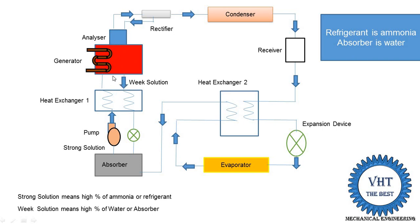The weak solution remaining in the generator — which is the absorber (water) — is supplied back into the absorber. However, the temperature of the weak solution in the generator is high. So we place heat exchanger 1 here: this heat exchanger increases the temperature of the strong solution being supplied into the generator. The weak solution rejects its heat, which is absorbed by the strong solution coming from the absorber, since its temperature is lower. This heat transfer from weak solution to strong solution means the generator receives a pre-heated strong solution.